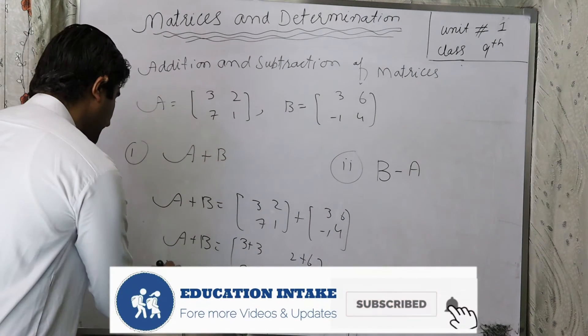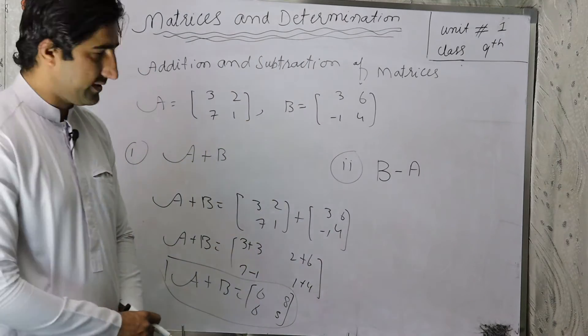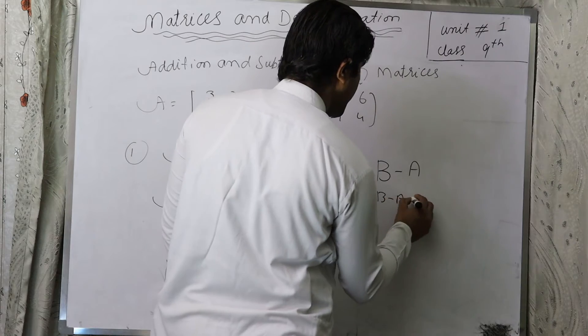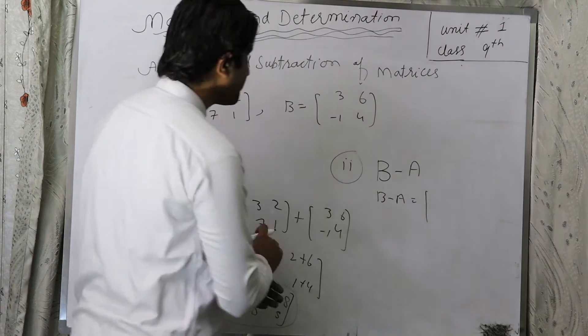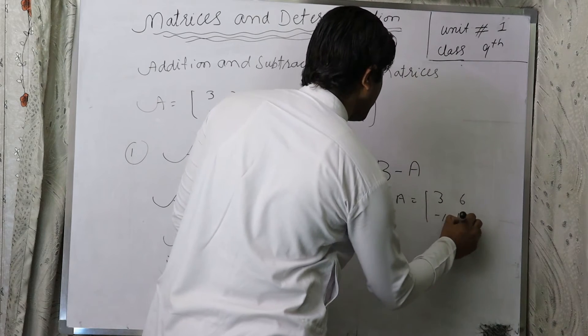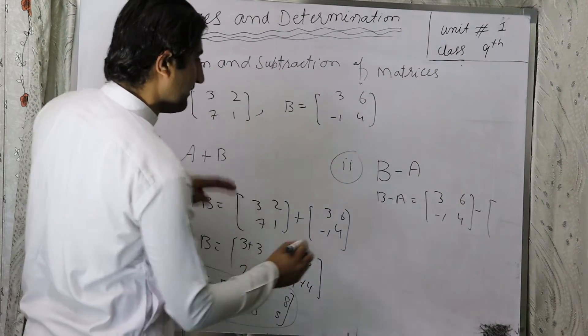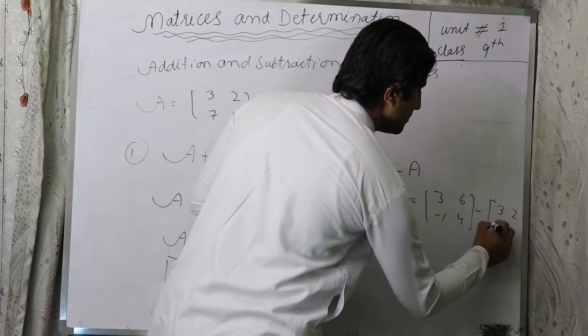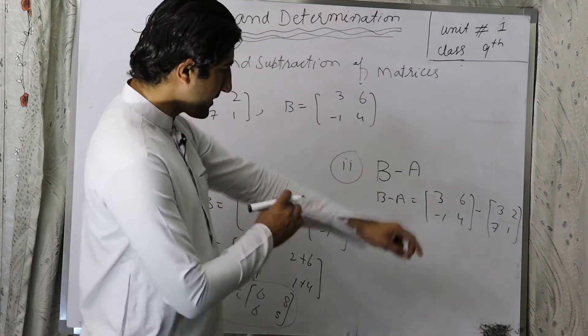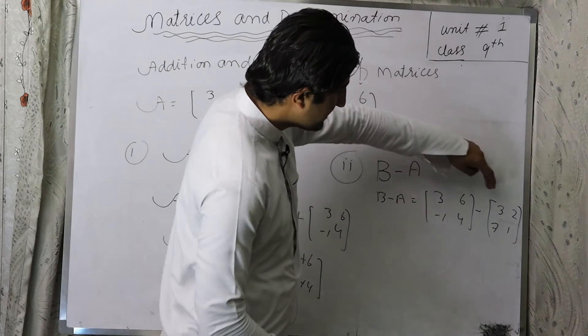So this is our addition of matrices A plus B. Now we will do B minus A. So guys, we have B minus A is equal to - now we will write here B: 3, 6, minus 1, 4, minus we will write A: 3, 2, 7, 1. We will have 2 matrices. Now we have minus, we will have to do it. Now 3 we will get out of 3.